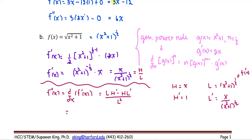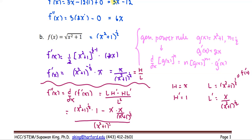Substituting into the quotient rule: the low, which is the quantity x squared plus 1 to the one-half, times d-high which is 1, minus the high which is x, times d-low which is x over the quantity x squared plus 1 to the one-half — all divided by the low squared, which is the quantity x squared plus 1 to the one-half, raised to the power 2.